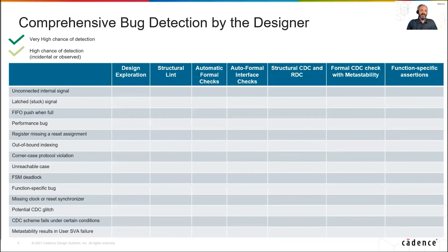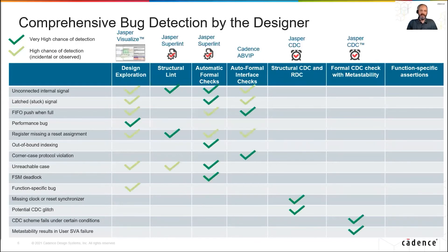When we combine design exploration, automatic formal checks, and designer-developed SVA, we can see that the designer has a powerful way to eliminate bugs and achieve RTL sign-off at the earliest point in the development cycle. This example shows that each of these common bugs can be detected by one or more of the methods shown. The important takeaway is that for all of the bugs listed, the designer has a high likelihood of detecting each type of bug without any simulation.